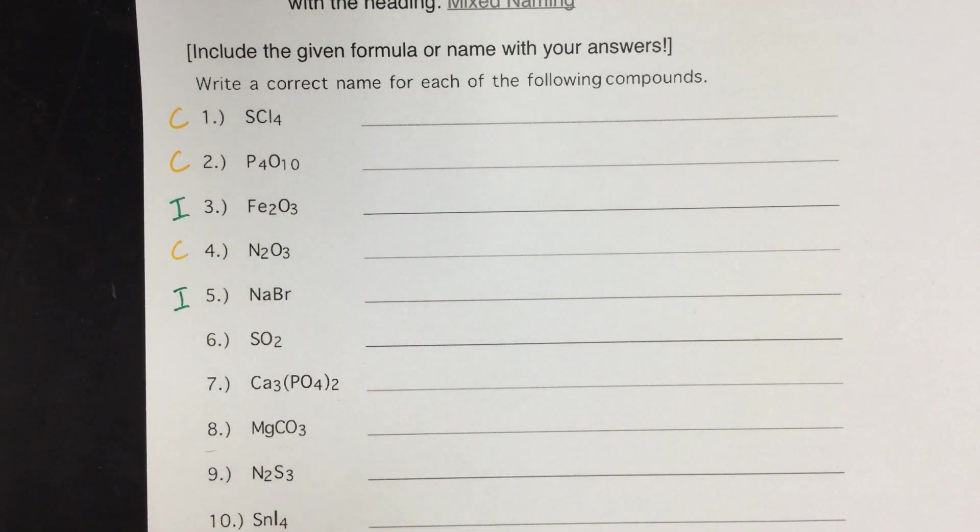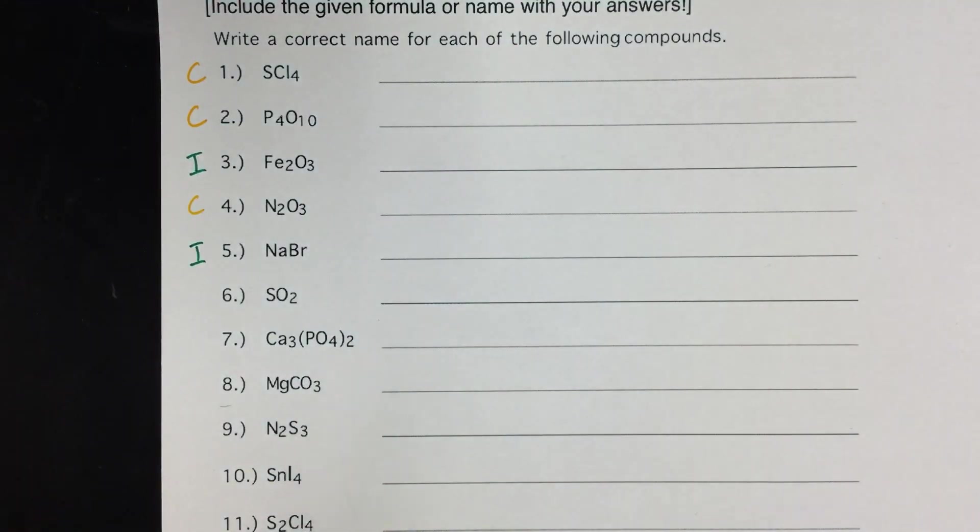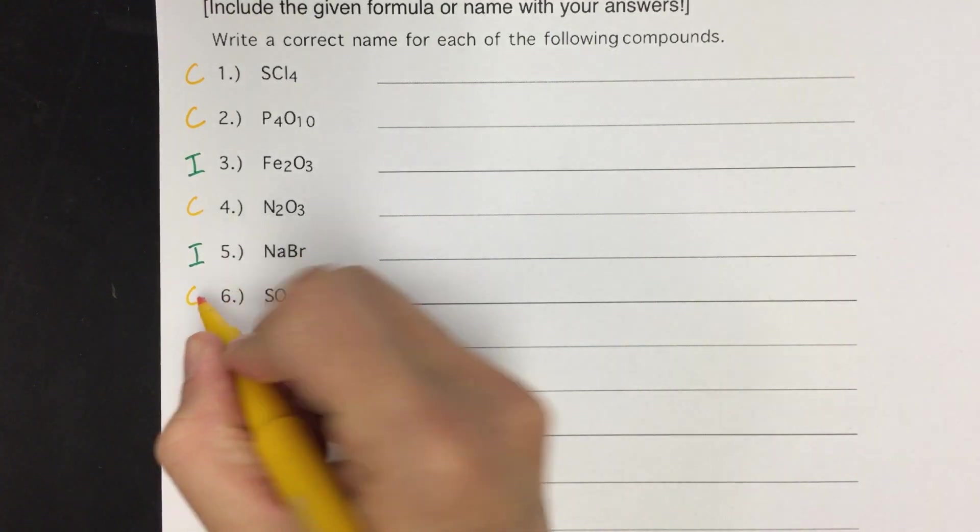We'll do a few more. Sulfur and oxygen for number six. Sulfur's here, oxygen's here. Two non-metals would be covalent.